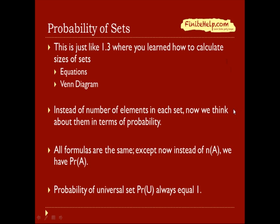All the formulas and all the concepts are the same, except instead of number of elements in A, we're going to have probability of A. So you need to know that probability of the universal set is always equal to 1.